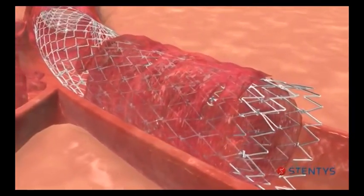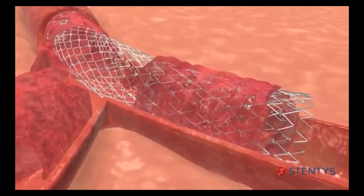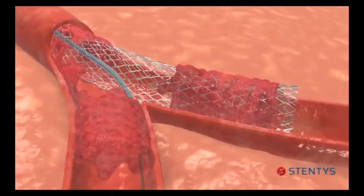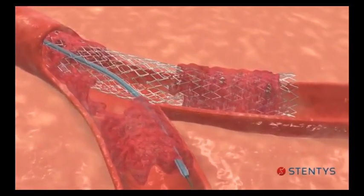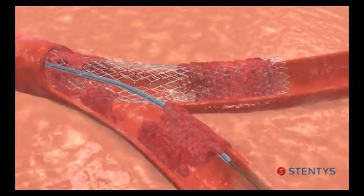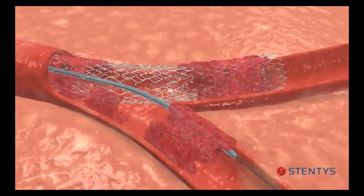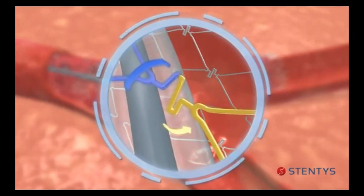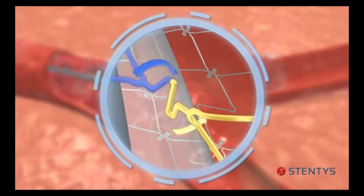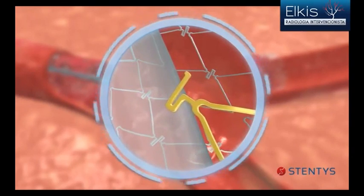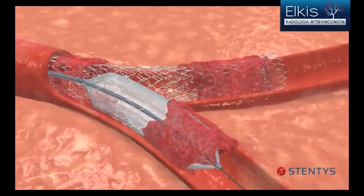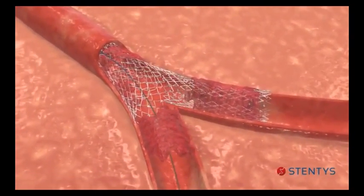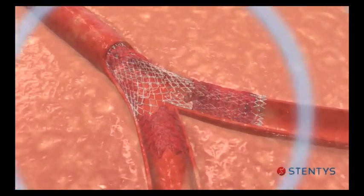If the Stentis stent is deployed across a significant side branch and access or treatment of the side branch is desired, a guide wire and a balloon are advanced through the stent mesh and into the ostium of the side branch, as would be done with a conventional stent. Rather than deforming the conventional stent struts, the balloon inflation gently separates Stentis' proprietary connectors at low pressure thanks to a combination of flexion and rotation. This allows the free mesh to cover the side branch ostium, providing uncompromised access to the side branch for optional further treatment.